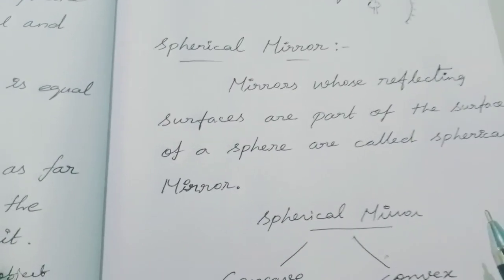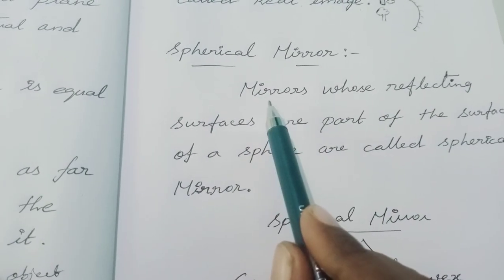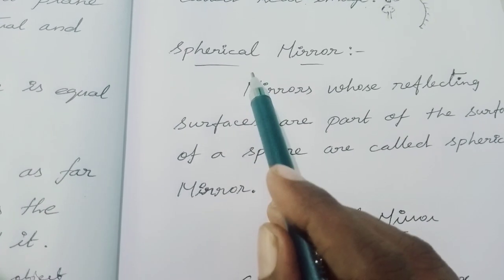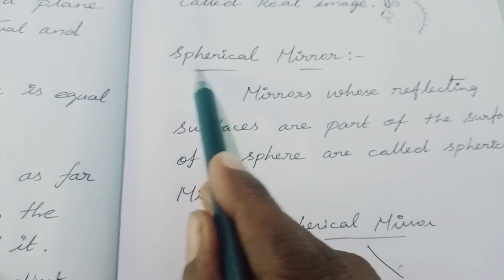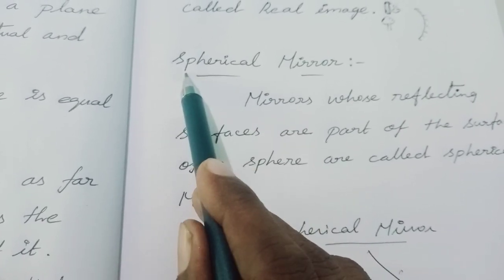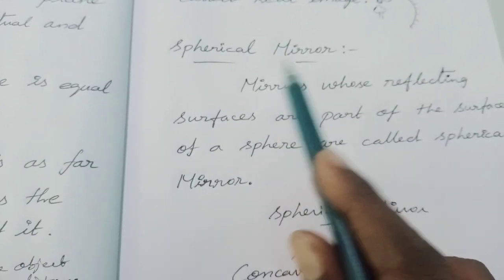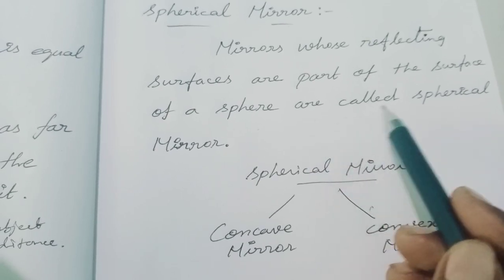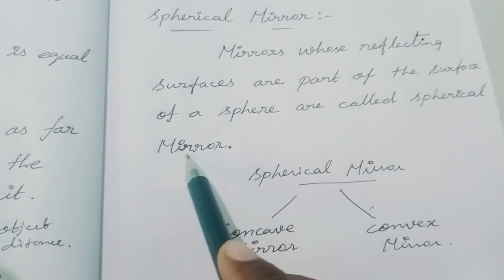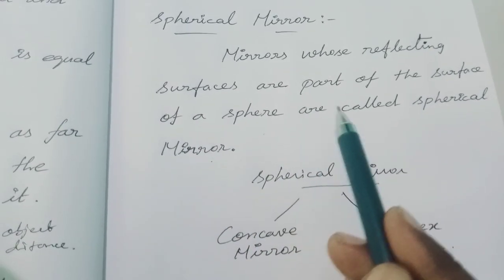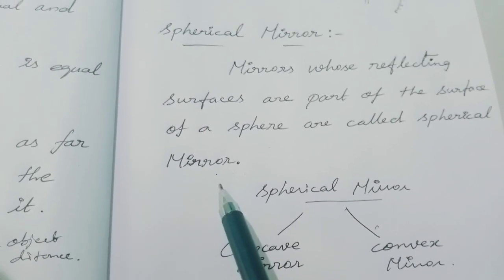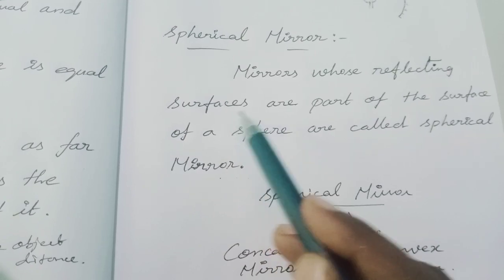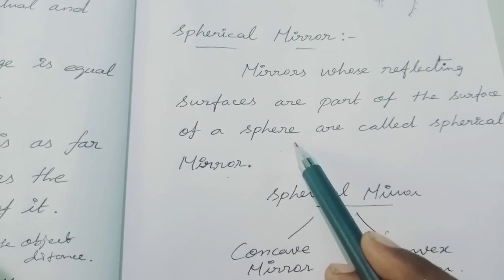Now the next thing is spherical mirror. Previously we discussed about the plane mirror and studied its properties. Now we are going to see what is a spherical mirror. The definition for spherical mirror: mirrors whose reflecting surfaces are part of the surface of a sphere are called spherical mirrors. One side should be polished and the other side should be faded for it to act as a mirror.